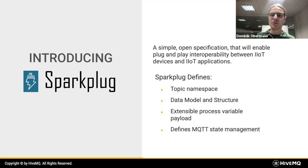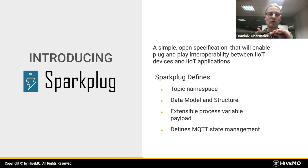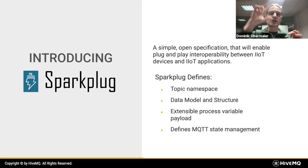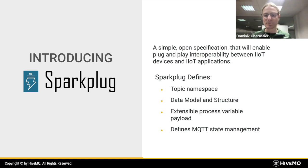What is Sparkplug? Sparkplug is a simple, open specification that enables plug-and-play interoperability between IIoT devices and applications. It does so by adding a defined topic namespace, a data model and structure, an extensive process variable payload, and defines MQTT state management. A good analogy: if HTTP transports data on the web, HTML gives it semantics. Similarly, MQTT transports data and Sparkplug gives it semantics — what HTML is to HTTP is what Sparkplug is to MQTT.